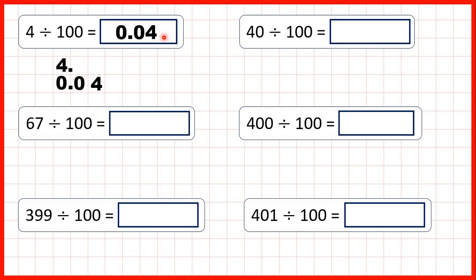That gives us our answer 0.04. Now we have 40 divided by 100. Again we write out the number 40 with a decimal point on the end, copy down the decimal point. We're dividing so the digits are moving to the right, and we're dividing by a hundred which has two zeros, so the digits will move two squares to the right.